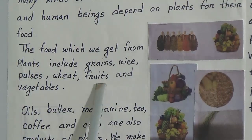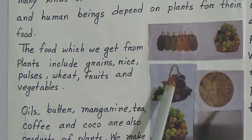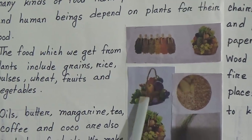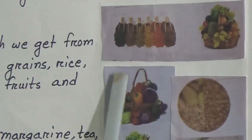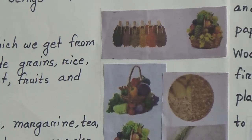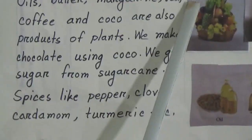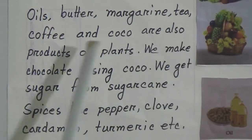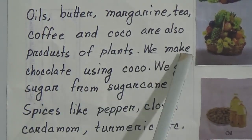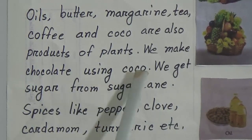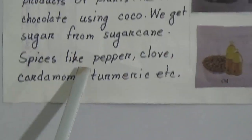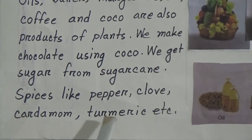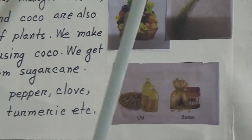The food which we get from plants includes grains, rice, pulses, wheat, fruits and vegetables. You can see here some grains, fruits and vegetables — all of these we get from plants. Oils, butter, margarine, tea, coffee and cocoa are also products of plants. We make chocolate using cocoa. We get sugar from sugarcane. Spices like pepper, clove, cardamom, turmeric etc. are all plant products. Spices make our food tasty.